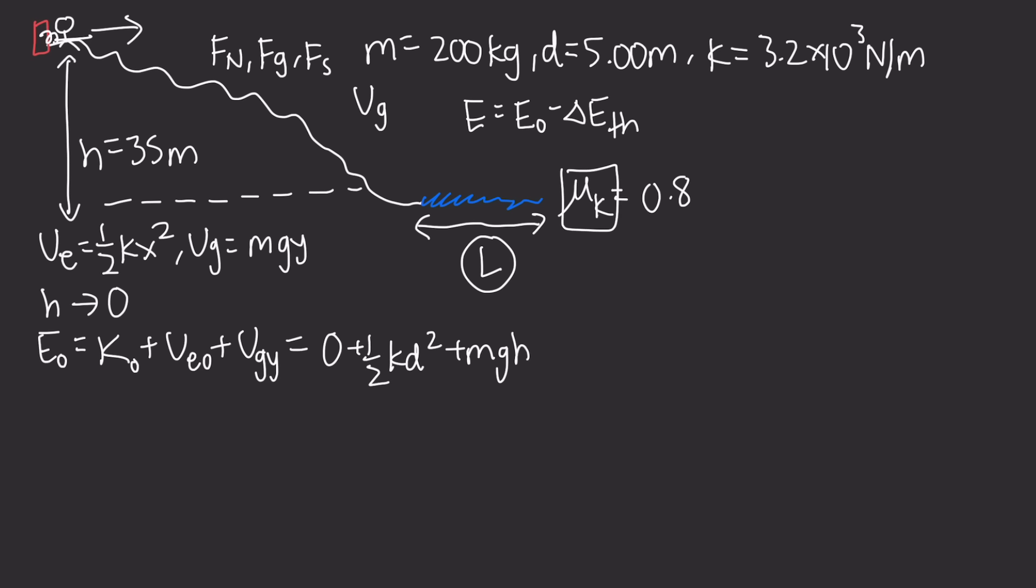Now doing the same thing for the final mechanical energy, we get K final plus spring potential final plus gravitational final, and all of these are equal to zero. What this tells us is that for the initial mechanical energy to become zero by the end, this means that the delta E thermal must be equal to E initial.